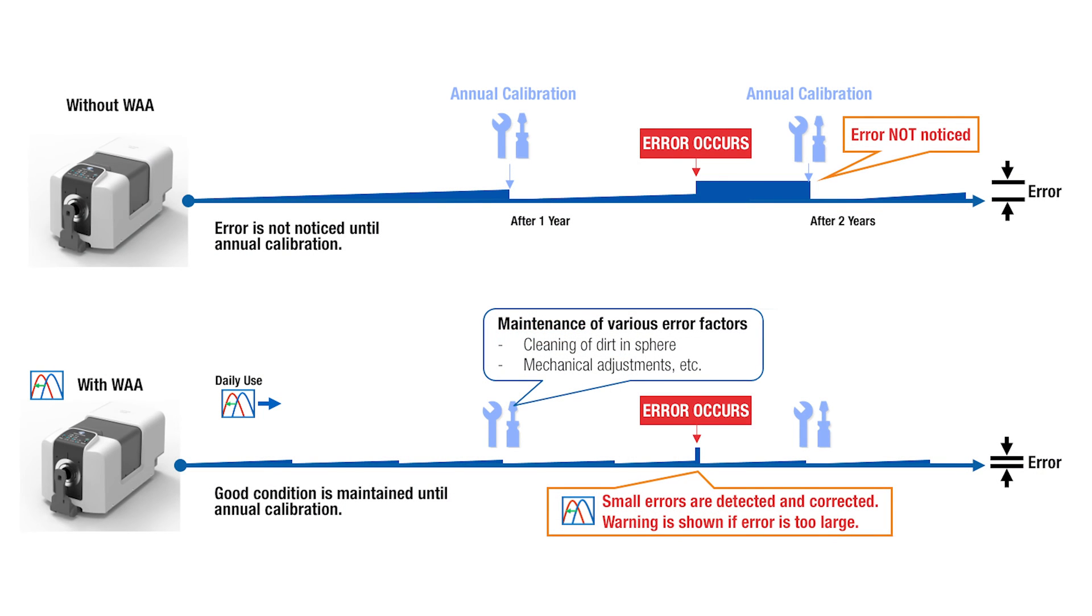The optional wavelength analysis and adjustment, a Konica Minolta Sensing innovation, compensates for slight shifts in measurement values due to external factors. When done together with annual calibration and maintenance, it contributes to stable operation.